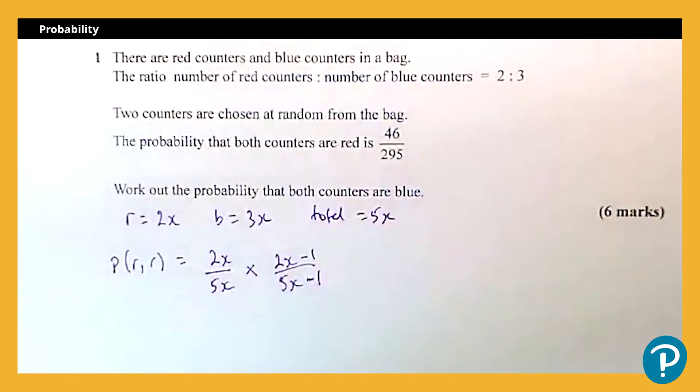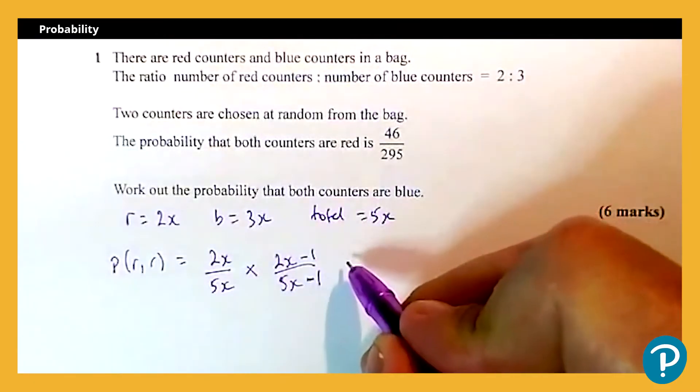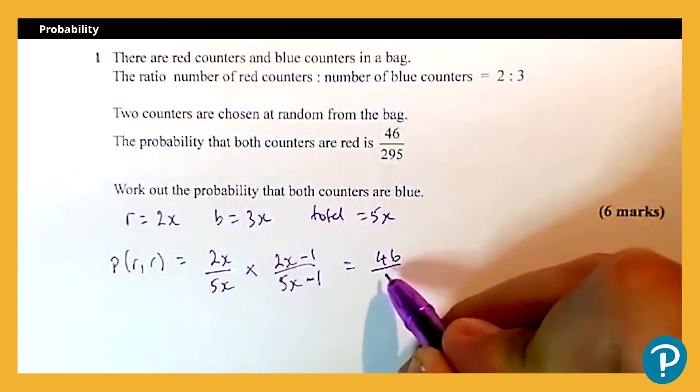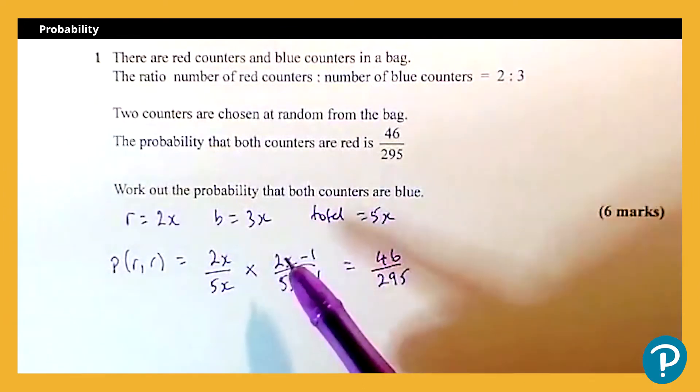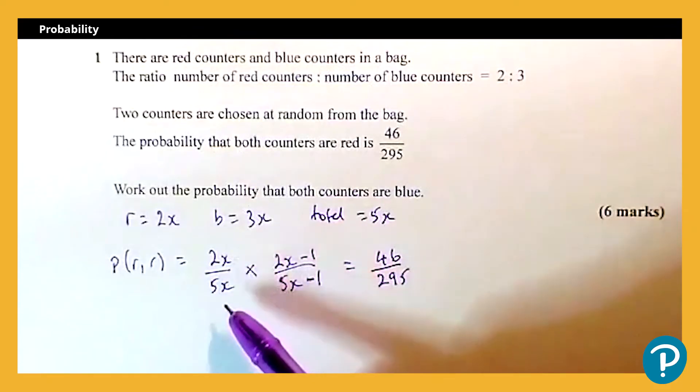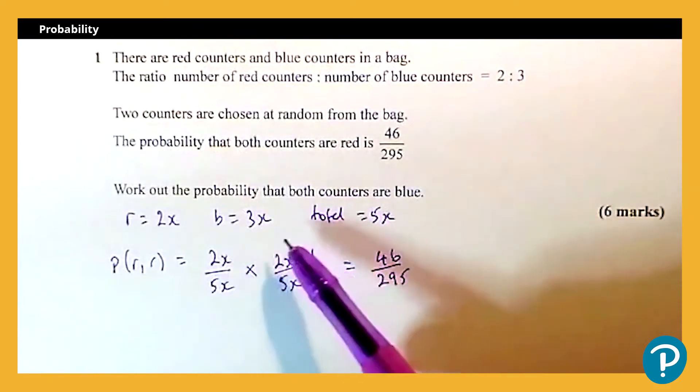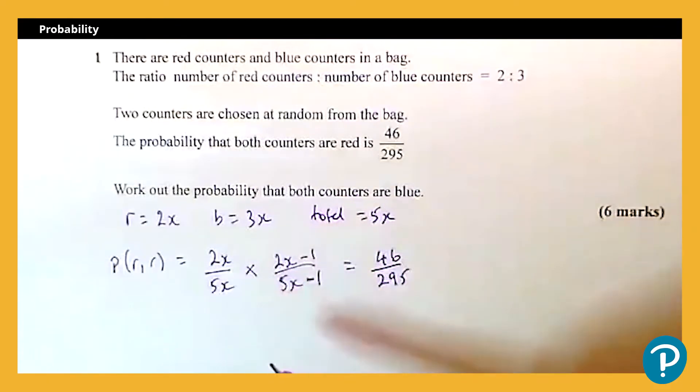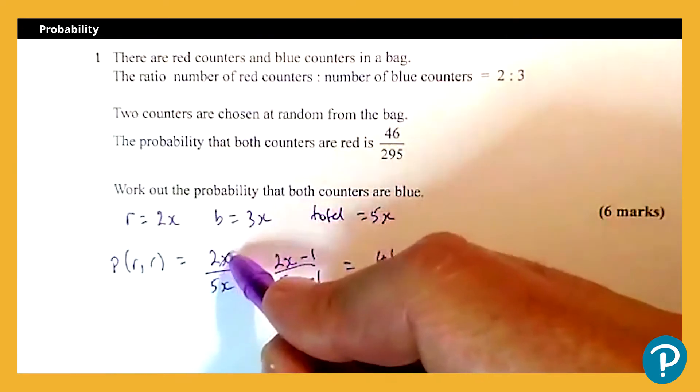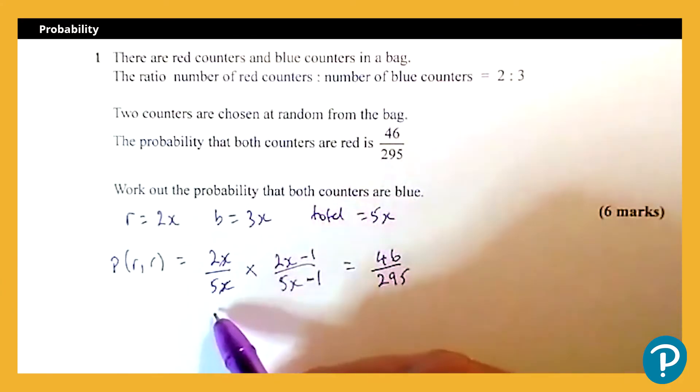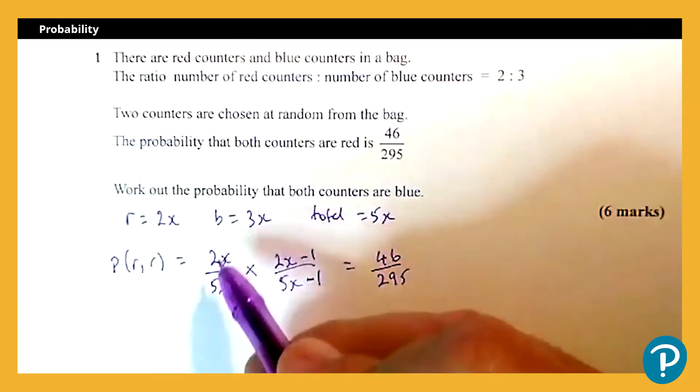And we know that that is equal to 46 out of 295. Now in many cases when we have an equation like this it will form a quadratic, and at first glance it looks like you can, but here we can divide top and bottom through by x. So it's actually two-fifths rather than 2x over 5x, so that just gives me a much simpler algebra.